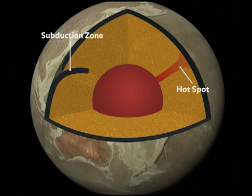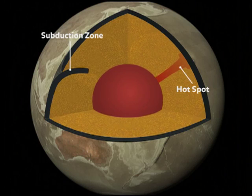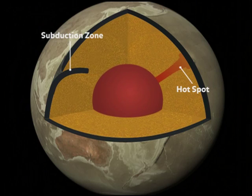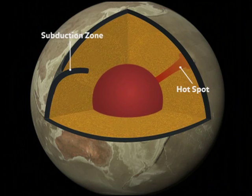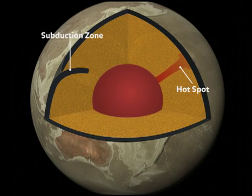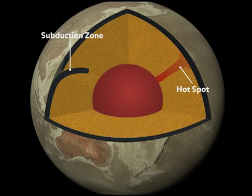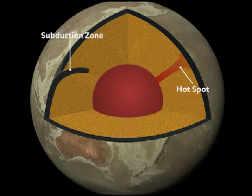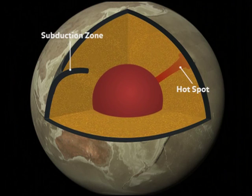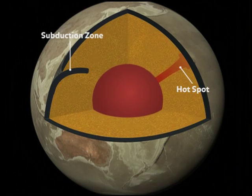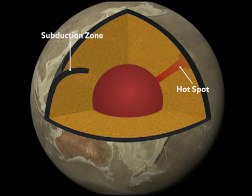The heat that drives mantle convection is a combination of heat left over from the formation of the planet, tidal forces, and heat from the radioactive decay of rocks in the mantle.